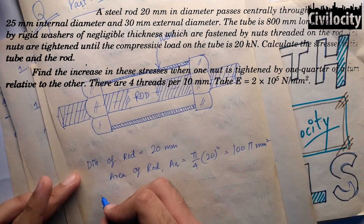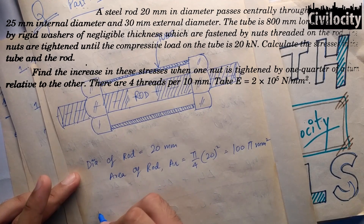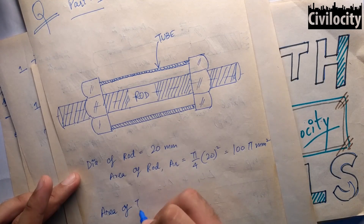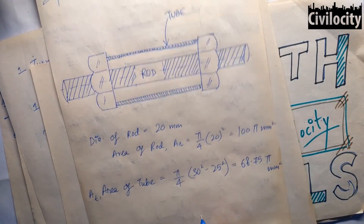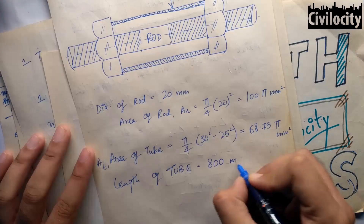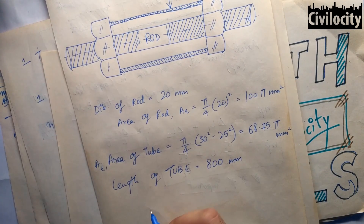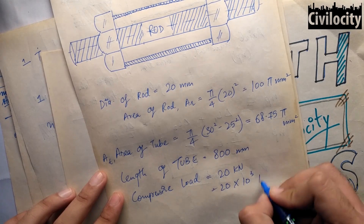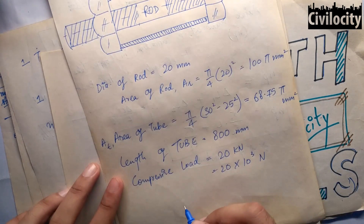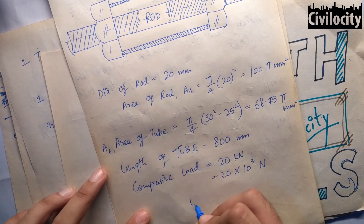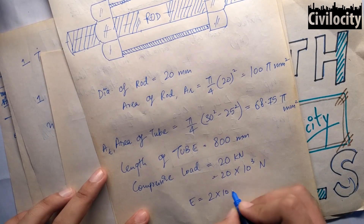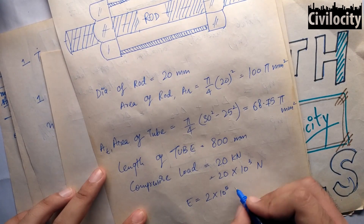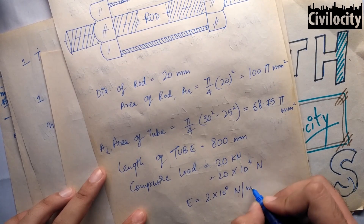The given data: diameter of rod is 20 mm, so area of rod is pi by 4 times 20 squared. Area of tube is pi by 4 times (30 squared minus 25 squared). Length of tube is 800 mm. Compressive load is 20 kN, that is 20 times 10 to the power 3 newton. Value of E is 2 times 10 to the power 5 N/mm².